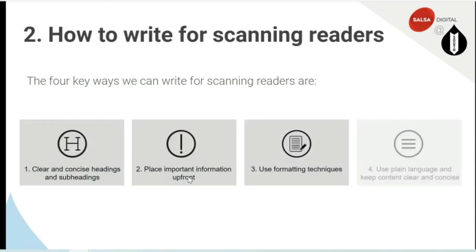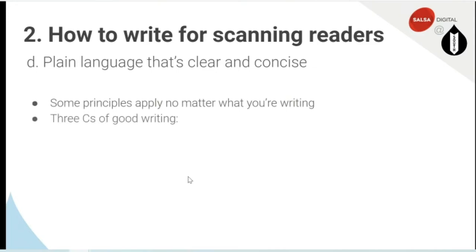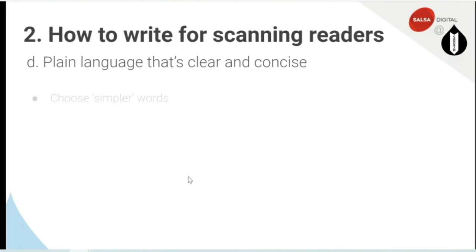The last one we're going to look at is plain language and keeping content clear and concise — a little bit of overlap from this morning's session, but more of a different take, so it's complementary. Some principles apply no matter what you're writing. The three Cs of writing: content should be clear, concise, and consistent. We're not going to talk about consistent today, but normally that includes consistency with tense, hyphenation — like always hyphenating 'co-founder' — and capitalising only proper nouns. We're going to focus more today on being clear, and briefly on being concise.